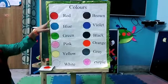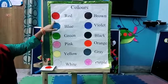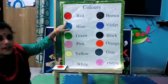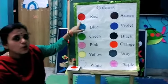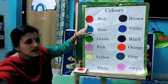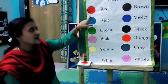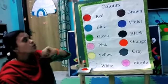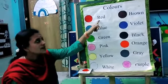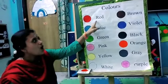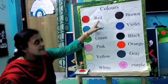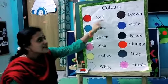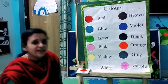First, what is this color? Everybody repeat. What is this color? Red color. What is the spelling for red? R, E, D. Red.